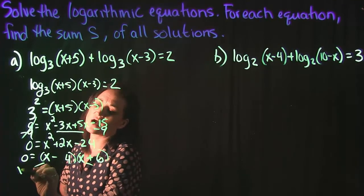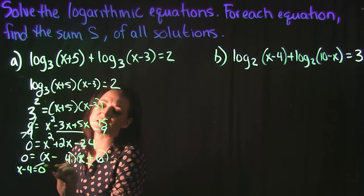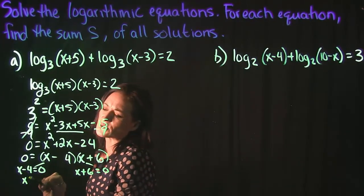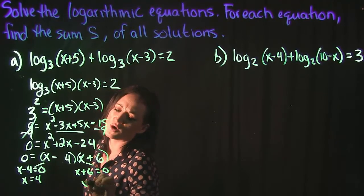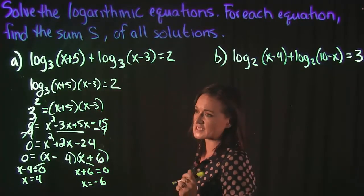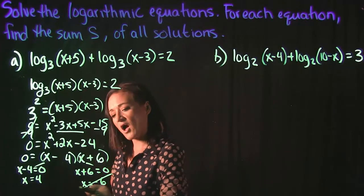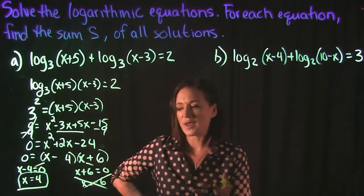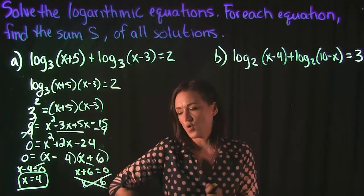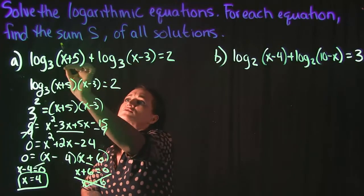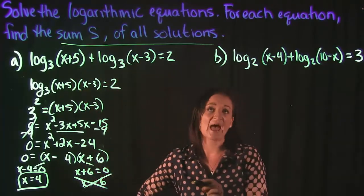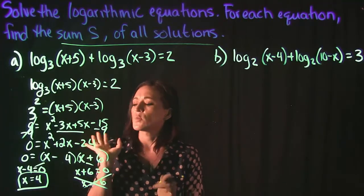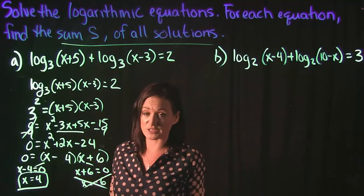Our zero factor property says that we can split each one of these up, set them each equal to zero and solve. So we get that x is equal to 4 and x is equal to negative 6. Remember when it comes to logs, negative answers do not count. So for this one, all we have is x equals 4, and because we only have one solution, there's no other solutions to add. Our answer is 4.